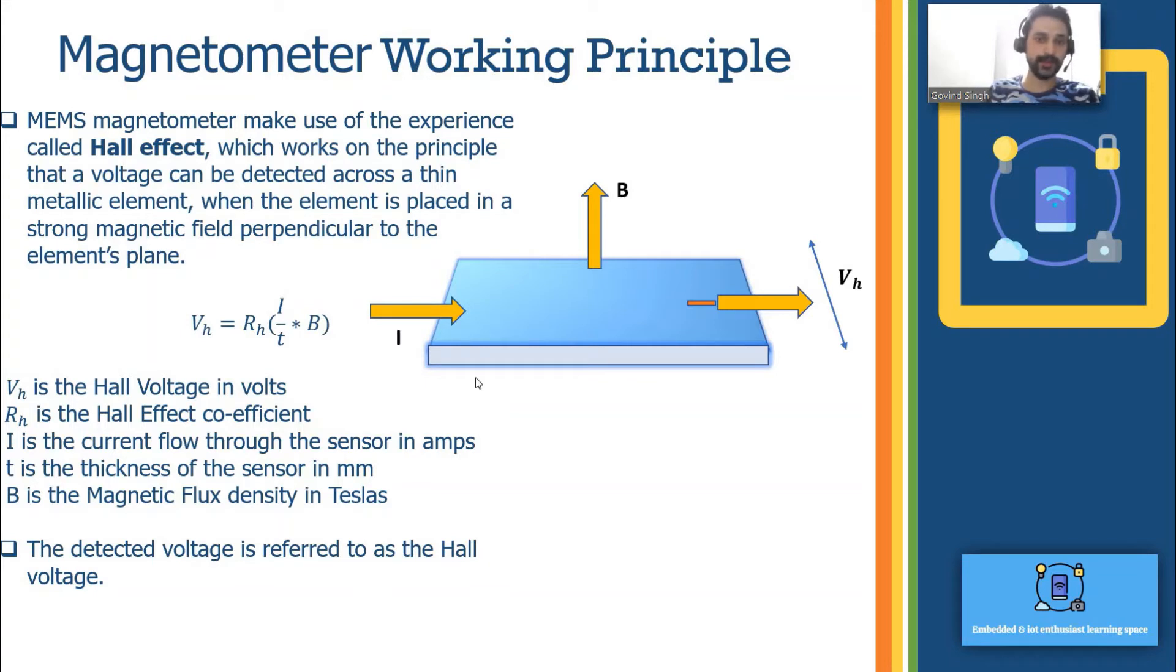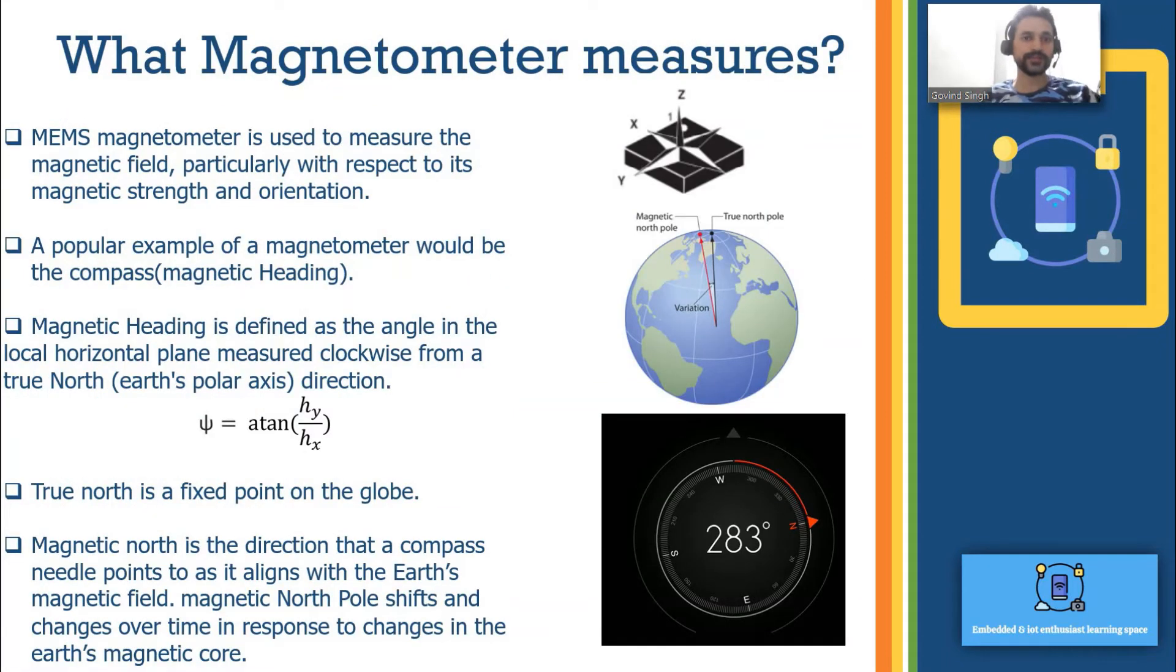The detected voltage is referred to as the Hall voltage and this overall phenomenon is called Hall effect. Now let's deep dive on what we can measure with the magnetometer.